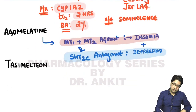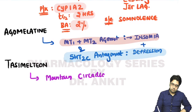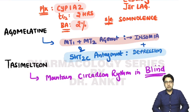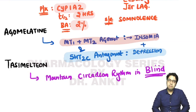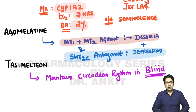The last drug is tasimelteon. Tasimelteon is an approved drug to maintain circadian rhythm in blind people, because blind people cannot differentiate between dark and light and do not know when to release melatonin, as their retina is not functioning. This concludes the treatment of insomnia and the various drugs used.